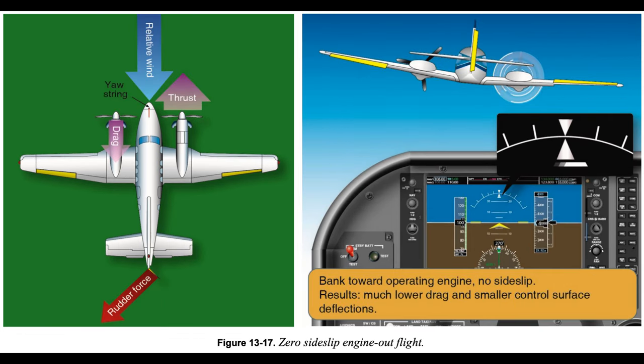Scenario three: rudder and ailerons used together in the proper combination result in a bank of approximately 2 degrees toward the operative engine. The ball is displaced approximately 1/3 to 1/2 toward the operative engine. The result is zero sideslip and maximum climb performance. Any attitude other than zero sideslip increases drag, decreasing performance. VMC under these circumstances is higher than published, as less than the 5-degree bank certification limit is employed. When bank angle is plotted against climb performance for a hypothetical twin, zero sideslip results in the best — however marginal — climb performance or the least rate of descent.